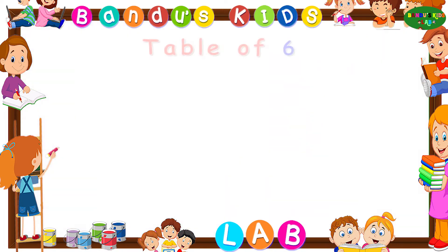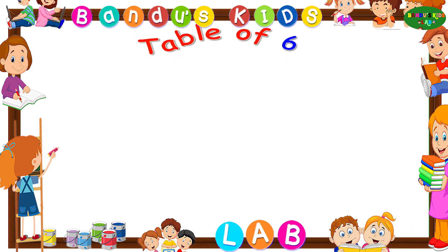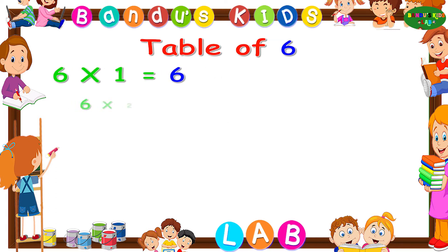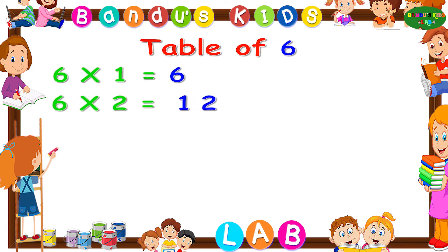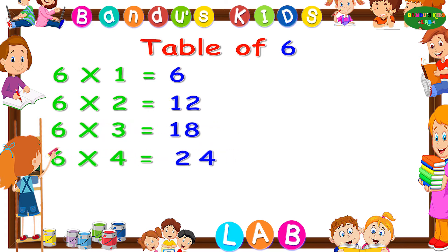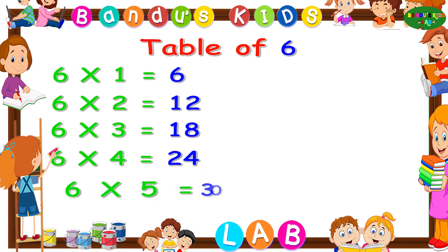Now let's revise the table of six by singing. Six ones are six. Six twos are twelve. Six threes are eighteen. Six fours are twenty-four. Six fives are thirty.